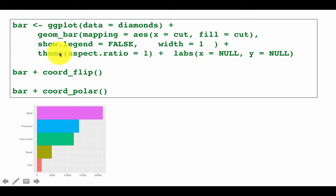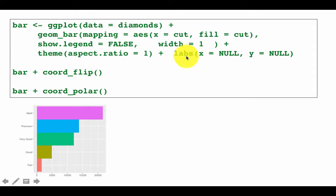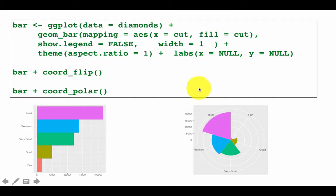The theme aspect.ratio equals 1 makes the x and y axis lengths the same. labs with x equals NULL and y equals NULL removes axis labels — that's why you don't see any labels. So bar plus coord_flip gives the flipped plot. There is also something called polar coordinates — it looks fancy and sophisticated, but for this particular purpose it's not a great graph. For some situations, polar coordinates are actually easier to interpret.